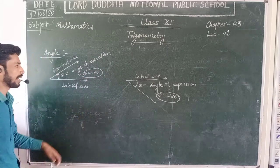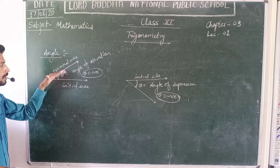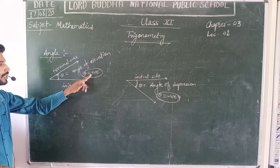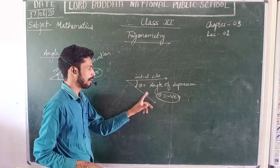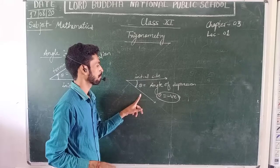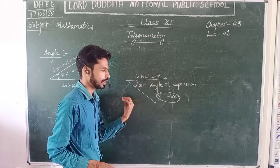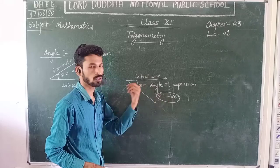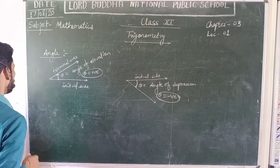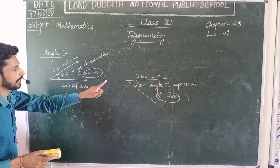When we are moving from the Initial side to the Terminal side in the Anticlockwise direction, the value of theta should be positive. And when we are moving from the Initial side to the Terminal side in the clockwise direction, the value of theta should be negative. So there are two types of angles: Angle of Elevation and Angle of Depression.